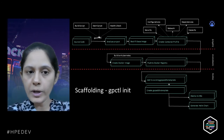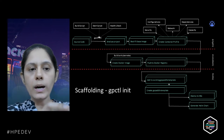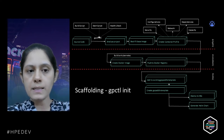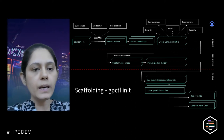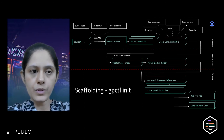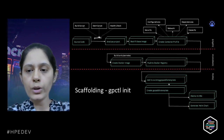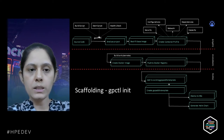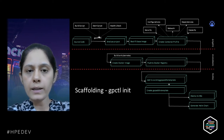Let's talk about the scaffolding process and its workflow. GPCTL is the command line utility — developers start by cloning the source code, then download and initialize GPCTL. Once done, they provide three inputs: a build script, a start script, and a health check. The build script describes how to build your application, just like on a local desktop. The start script describes how to start the application, and the health check tells us when the service is up and running. These are plain shell scripts just like what you'd use on a local desktop.